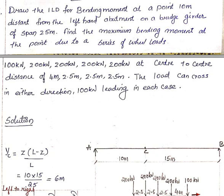Draw the influence line diagram for bending moment at a point 10 meters distance from the left-hand abutment on a bridge girder of span 25 meters. Find the maximum bending moment at the point due to a series of wheel loads: 100 kN, 200 kN, 200 kN, 200 kN at center-to-center distances of 4m, 2.5m, 2.5m. The load can cross in either direction with 100 kN leading in each case.